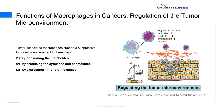Regulation of the tumor microenvironment: Many factors such as CSF1, VEGFA, CXCL12, ANG2, CCL5, and CCL2 in solid tumors can recruit angiogenic macrophages. This enrichment allows macrophages to play a major role in the construction of the tumor immune microenvironment. Tumor-associated macrophages support a suppressive tumor microenvironment in three ways. One, by consuming metabolites — for example, L-arginine, which is essential for T-cell activation, can be metabolized by tumor-associated macrophages with high expression of ARG1.